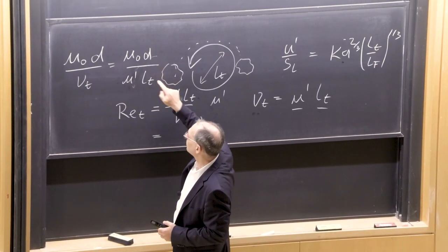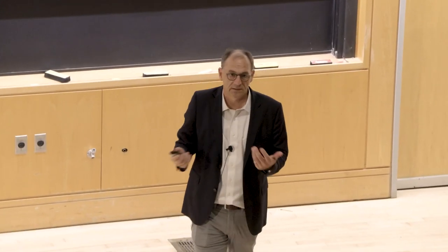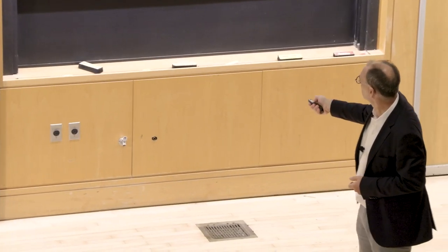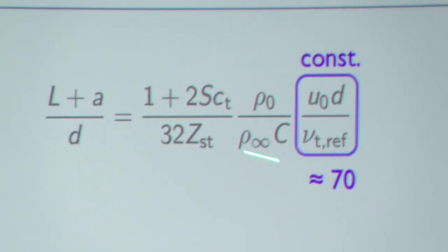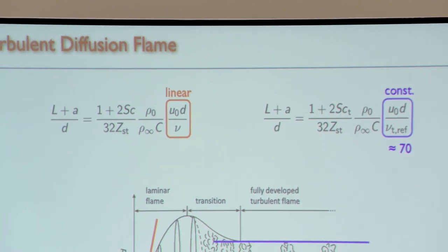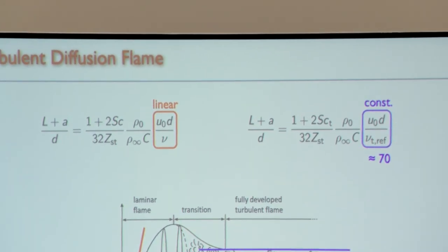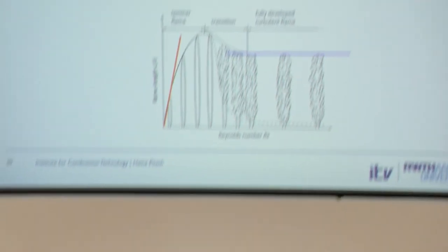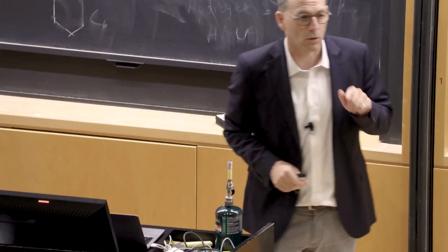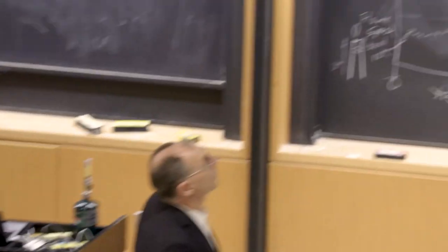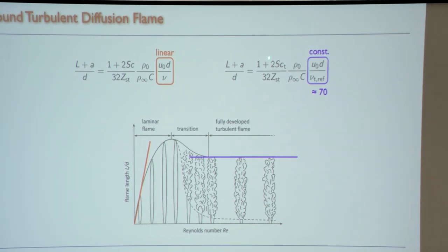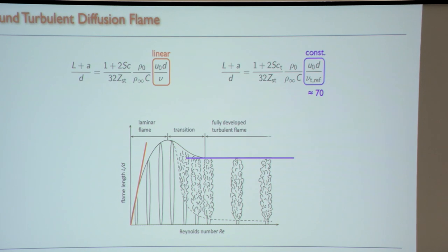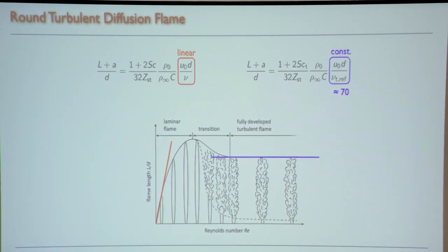This ratio u₀·d / (u'·L_T) is basically a constant, because both u' and L_T scale linearly with u₀ and d respectively. From experiments, this is roughly equal to 70. So the Reynolds number dependence drops out — as soon as you get a transition to turbulence, the flame length should be independent of Reynolds number. Only the stoichiometric mixture fraction and the nozzle diameter control the flame length.